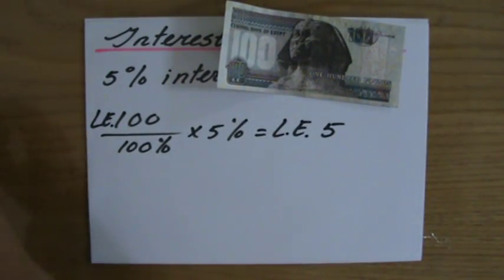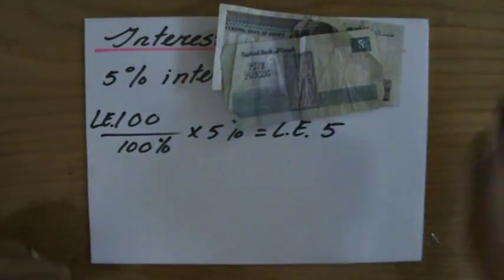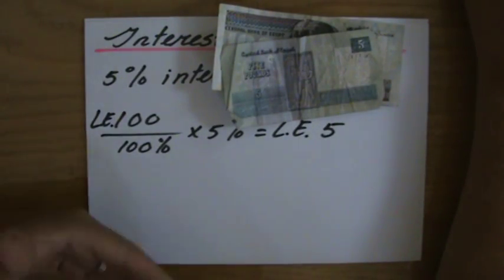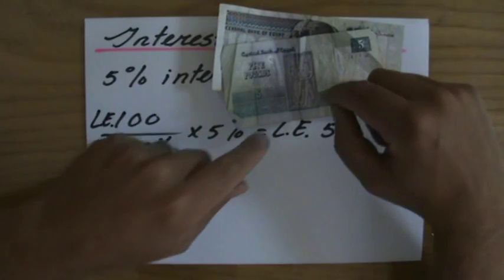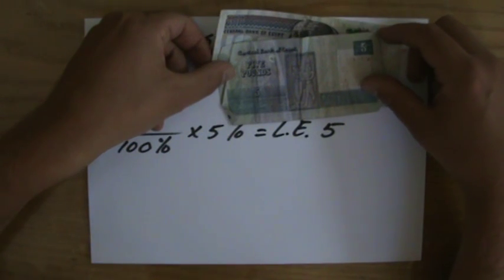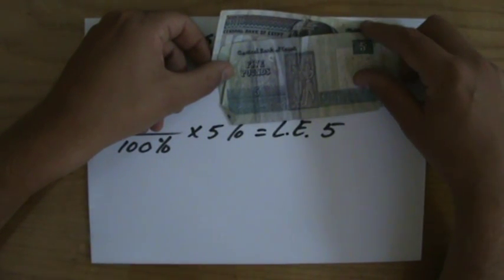So the bank is gonna say, well thank you very much for giving us that money for a year. As a thank you we're gonna give you interest, which in this case equals to five percent, so five LE.